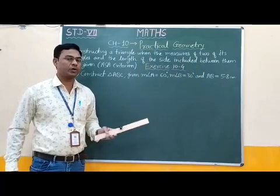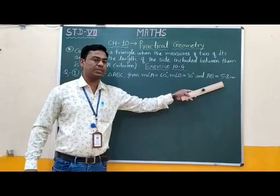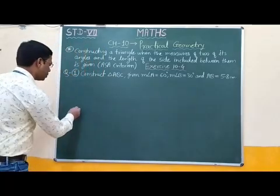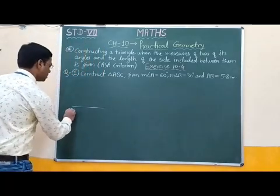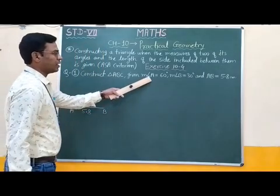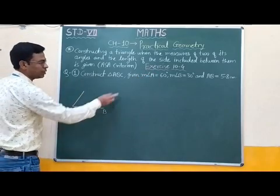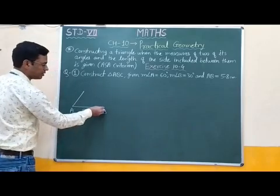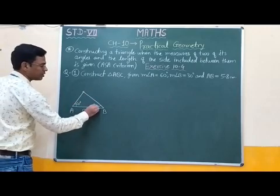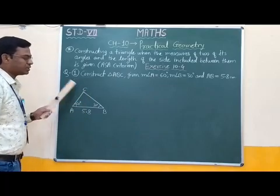First of all, here we have to draw a rough figure. Here only one side is given, that is the length of one side is given. Therefore we have to take this AB side as base. Therefore this AB side is equal to 5.8 cm. Measure angle A is 60 degrees, therefore this angle is 60 degrees. Measure angle B is equal to 30 degrees, this angle is 30 degrees. And this point is C, or this vertex is C vertex.